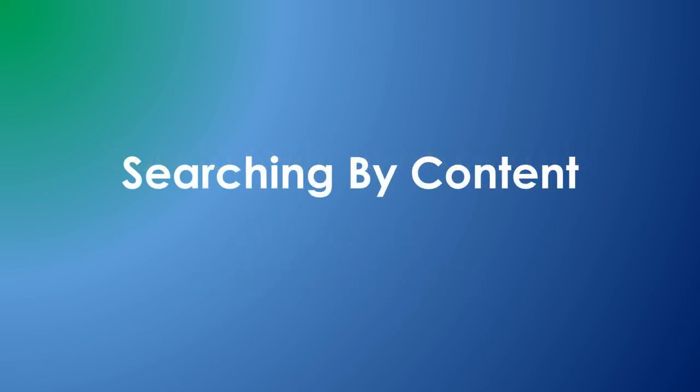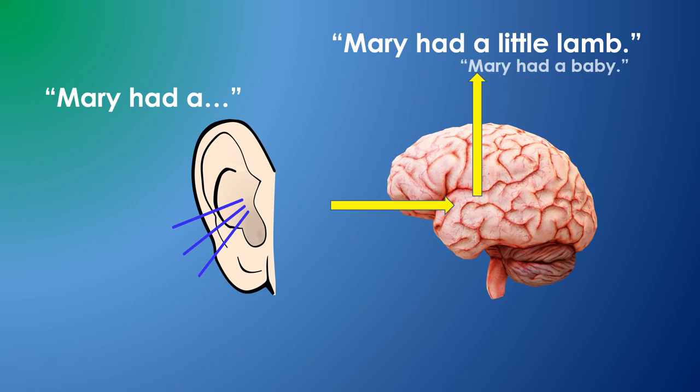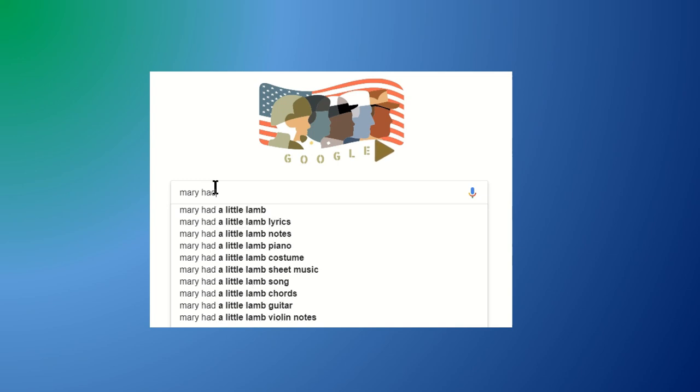Your memory includes phrases of speech. If you hear Mary Hadda, your brain will find the match and fill in the rest of the phrase. It may also find alternative matches of lower probability. Google is already really good at this, much better than your brain.